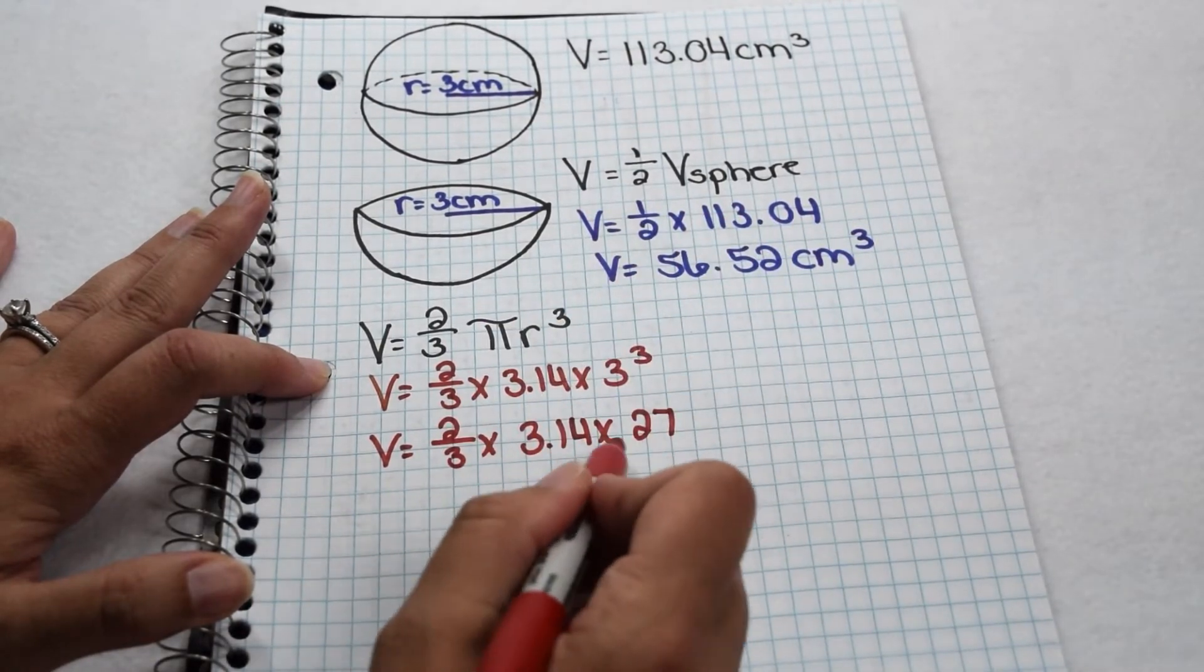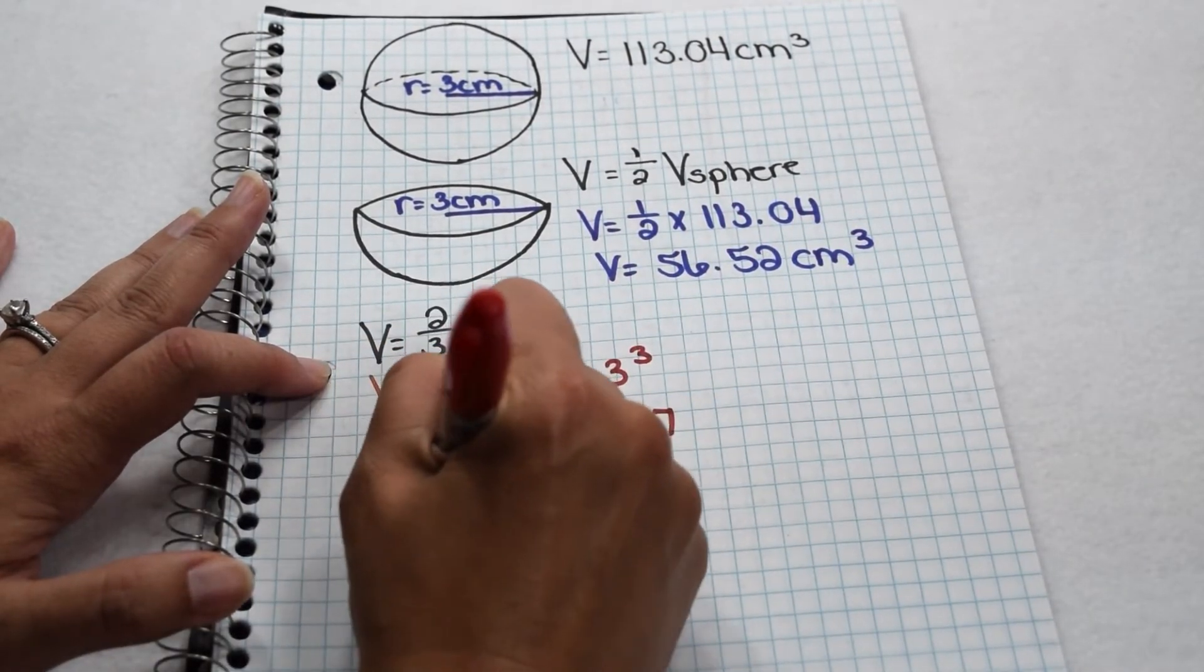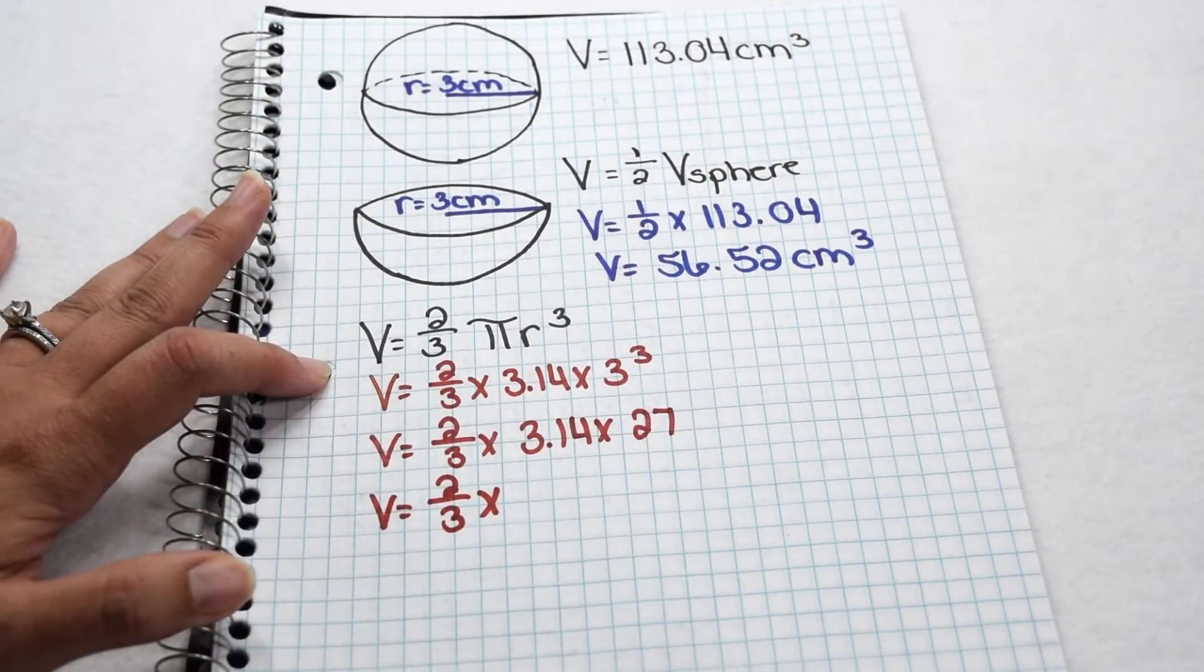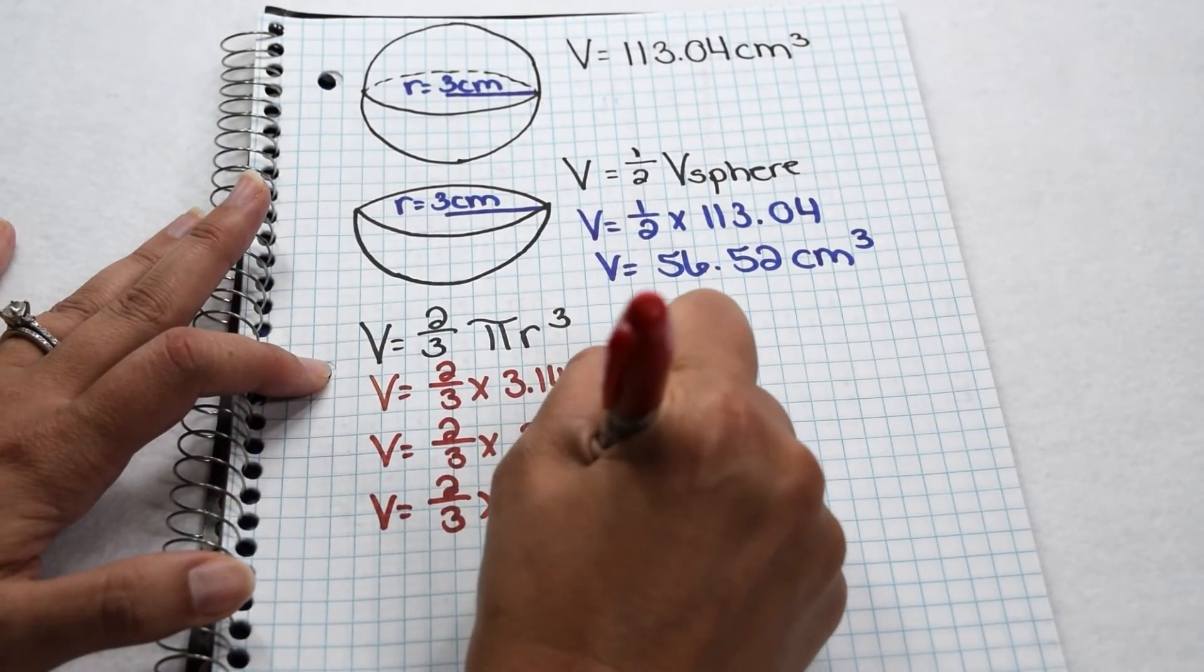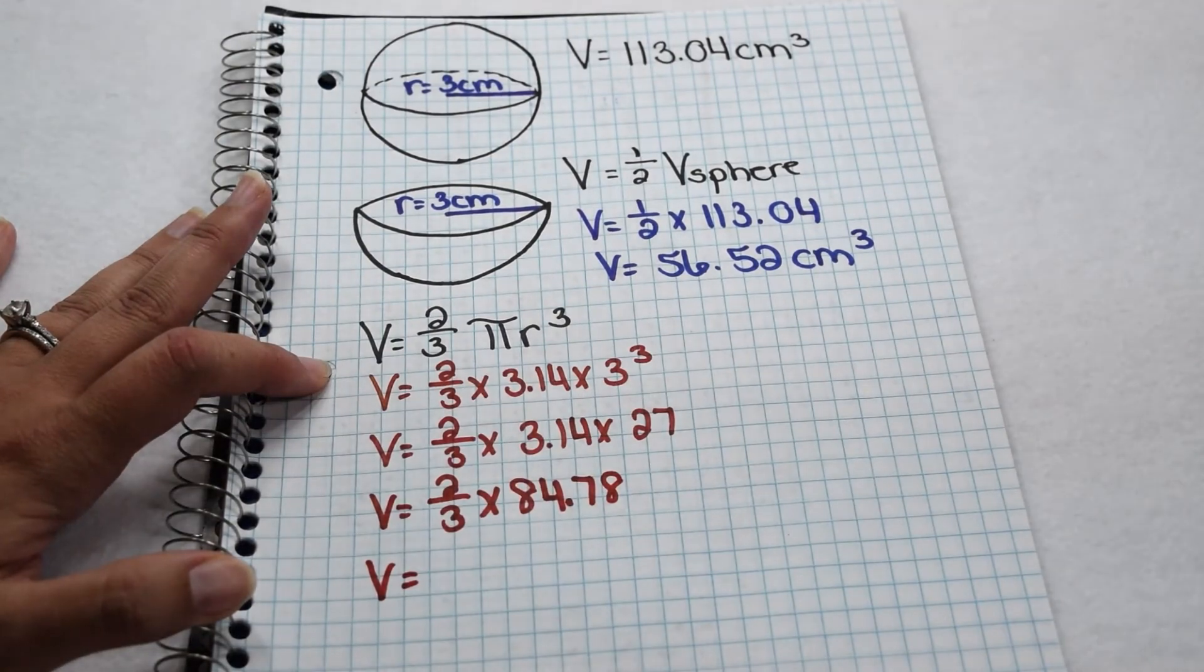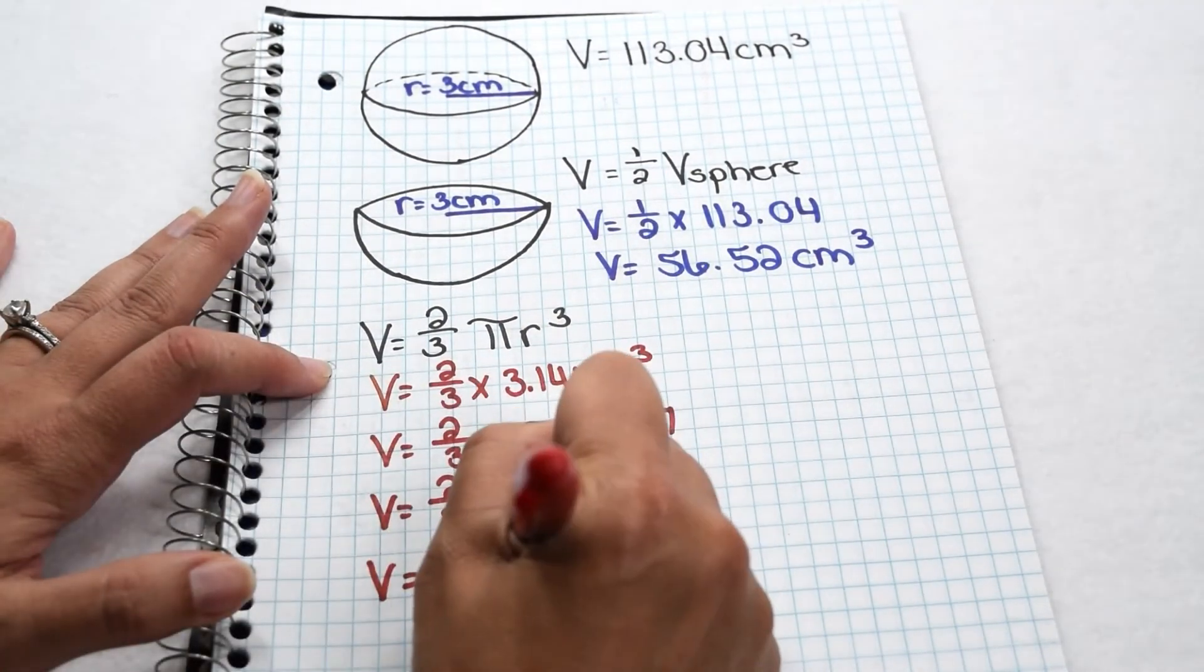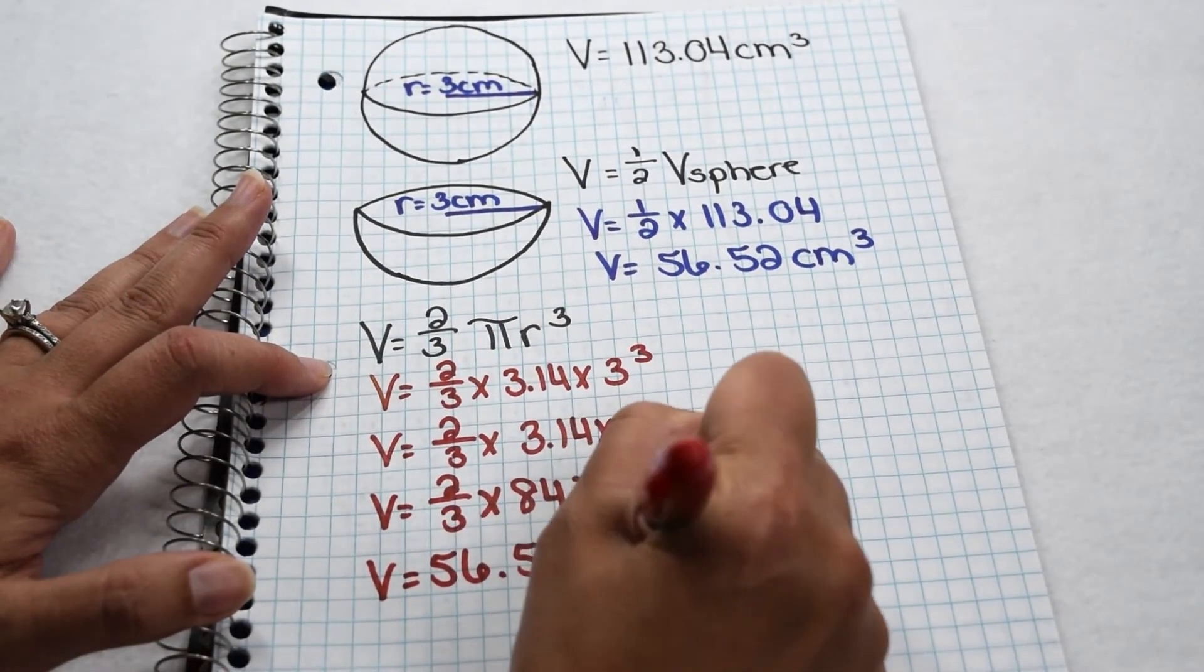Let's multiply our decimal and our whole number first, and we'll come back and pick up our fraction at the end. So that means we have two-thirds times 84.78. When we take two-thirds of that value, that also comes out to be 56.52 cubic centimeters.